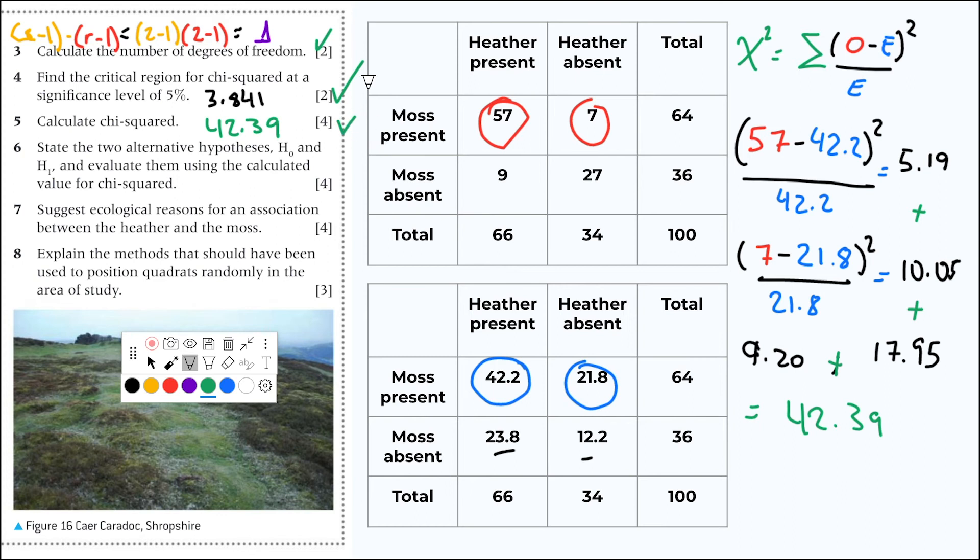Now state the two alternative hypotheses, H0 and H1, and evaluate them using the calculated value for chi-square. So the null hypothesis, H0, expects no association between Heather and Moss, and the alternative hypothesis expects to be an association between Heather and Moss.